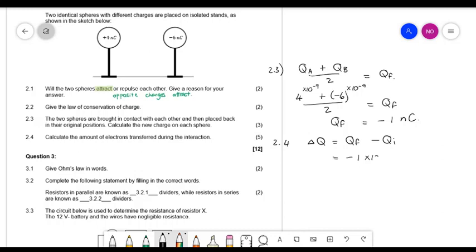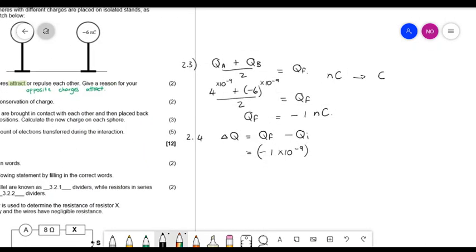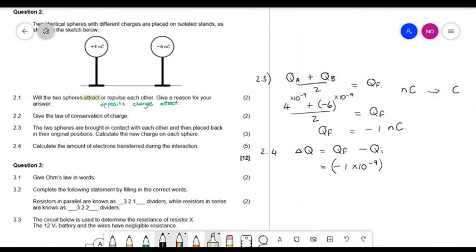So nanocoulomb is times 10 to the power of minus 9. So the final charge is the same on both, I get it from there. Minus the original charge of the one is 4 times 10 to the power minus 9. So we have minus 1 minus 4 times 10 to the power minus 9. So this is minus 5 times 10 to the power minus 9 coulombs that were transferred.